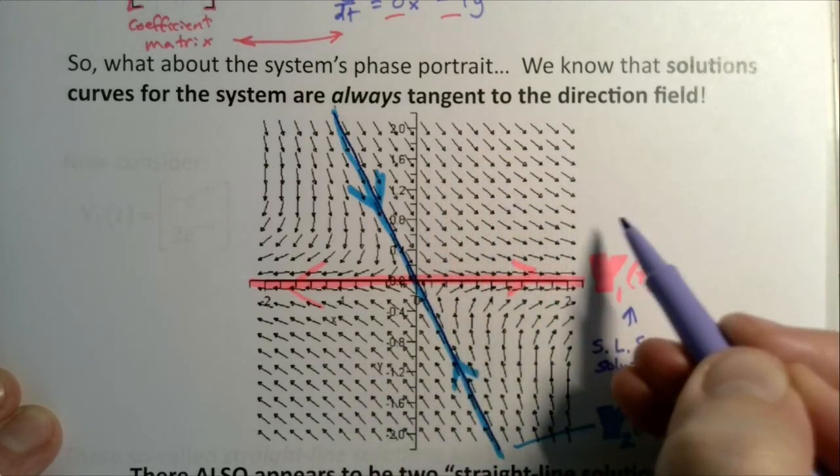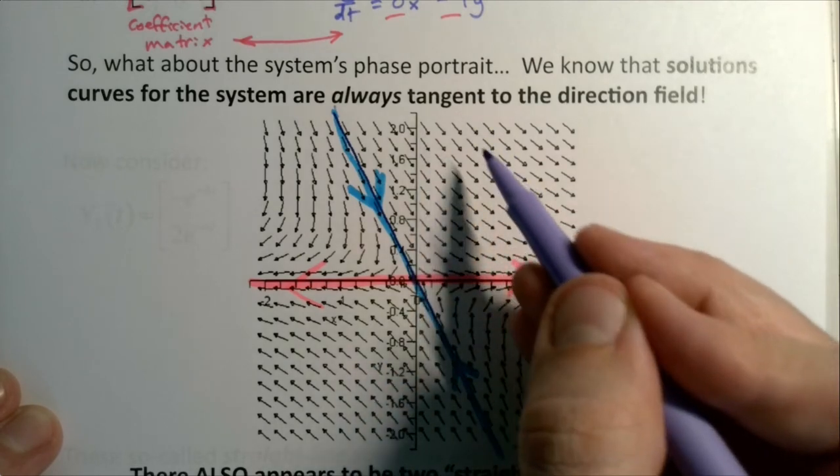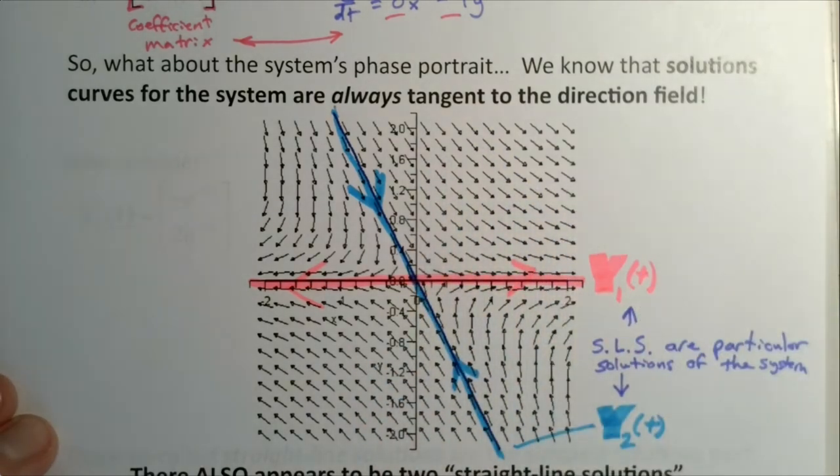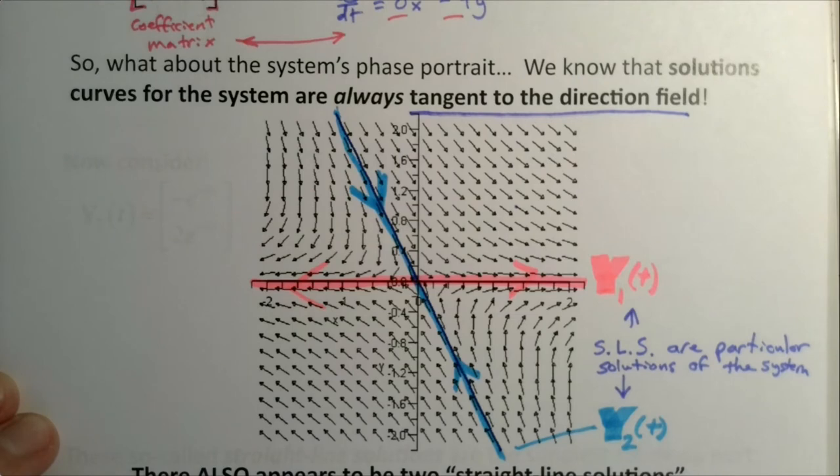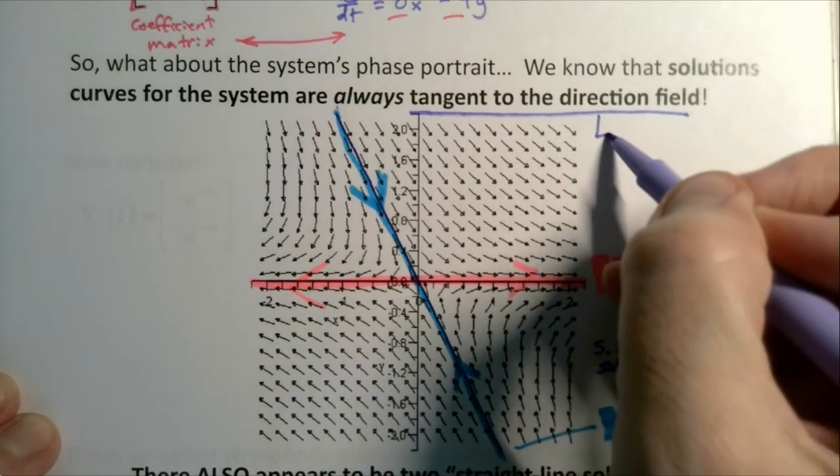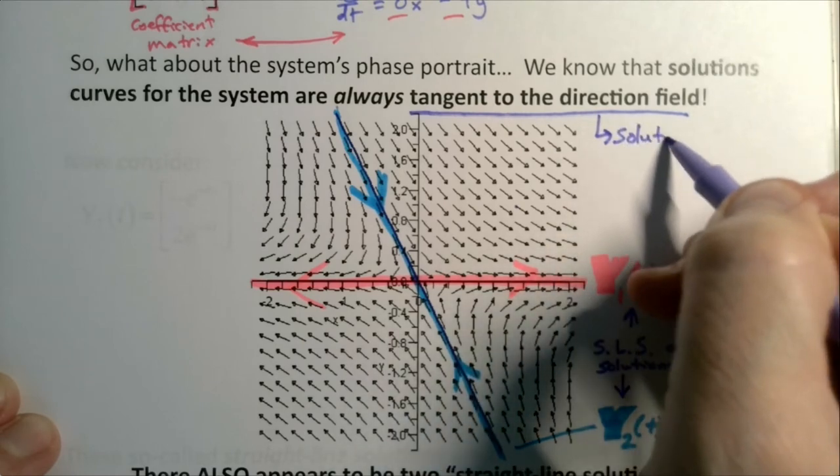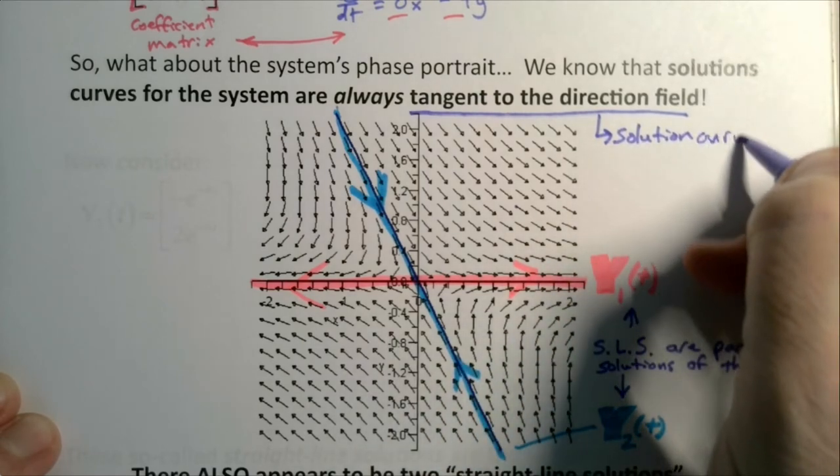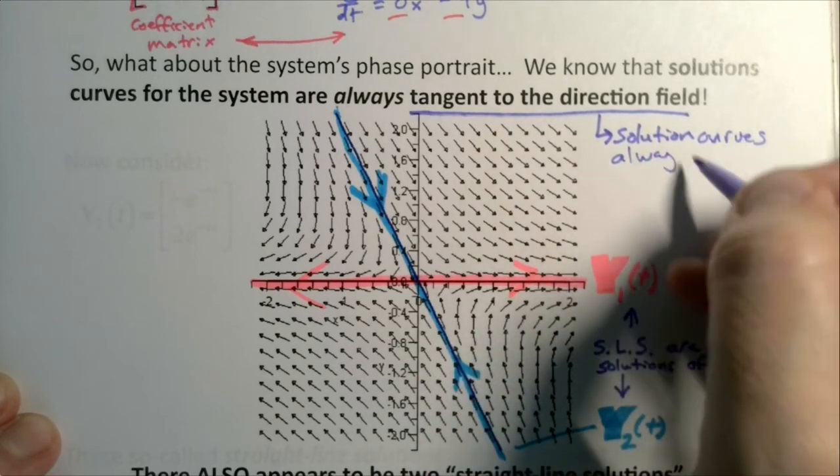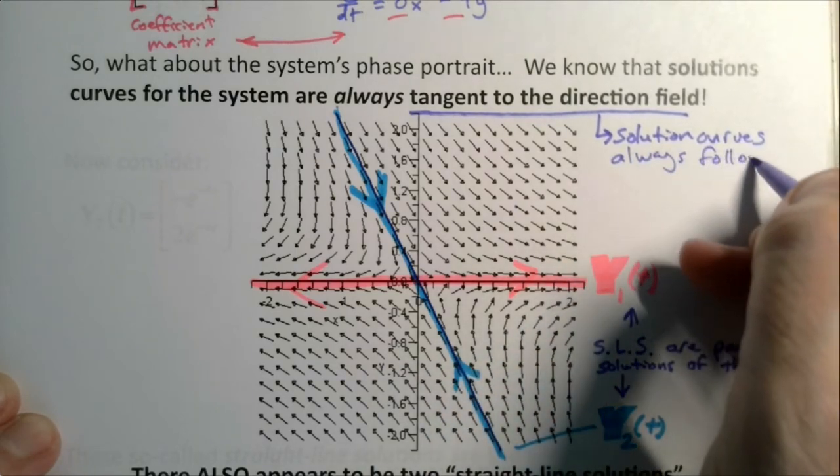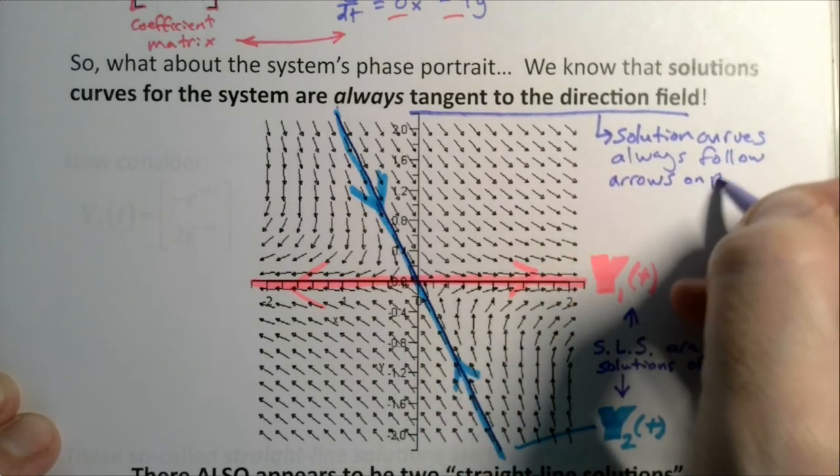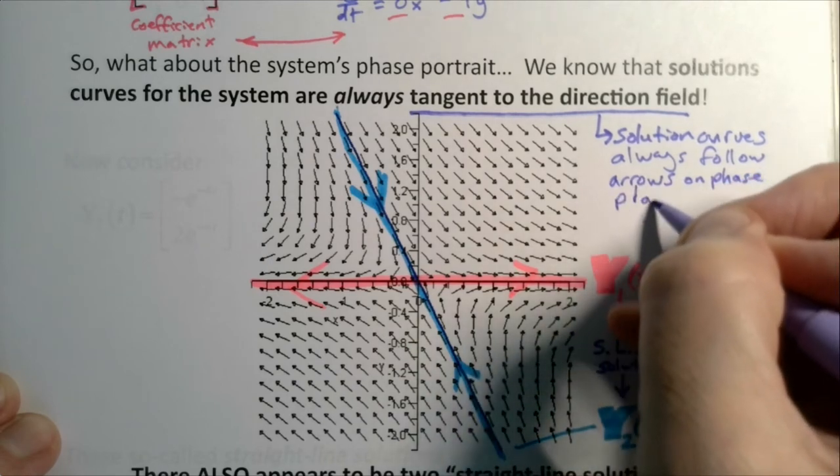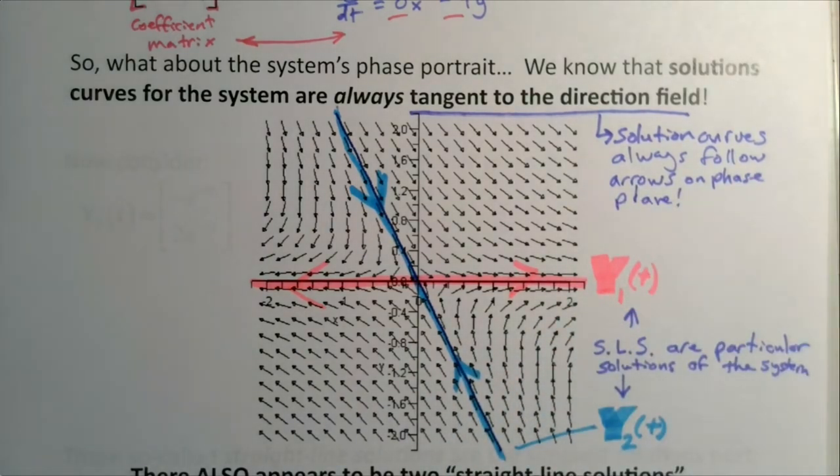But it's also affected by this one, so it's headed kind of in that direction. What you wind up with is a curve that follows both of those straight-line solutions. But in the end, every curve, every solution curve for the system is always tangent to the direction field. So our solutions, our solution curves, always follow the arrows on the phase plane. They don't have a choice. They have to follow those.